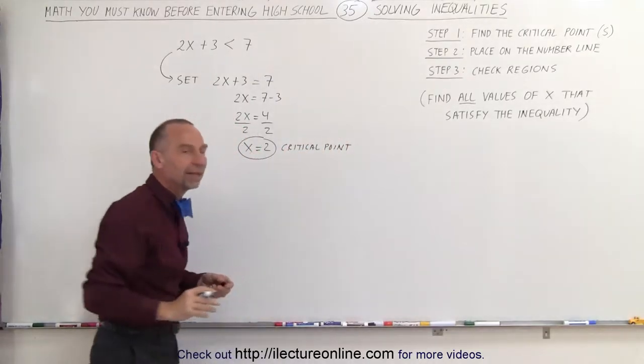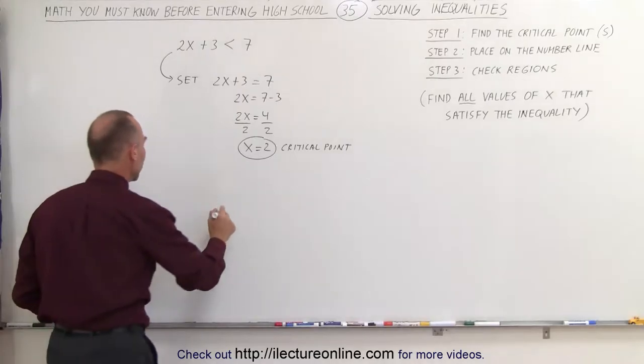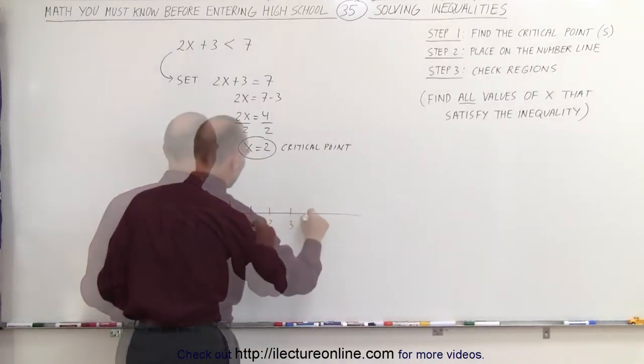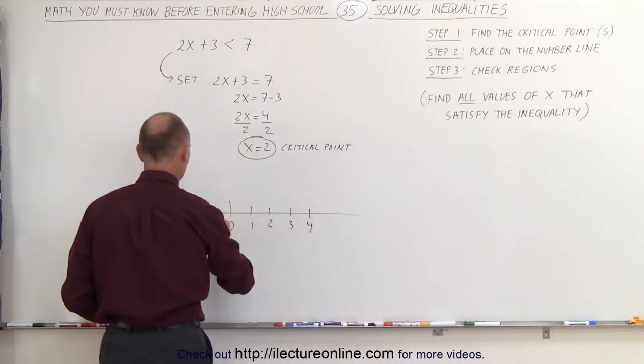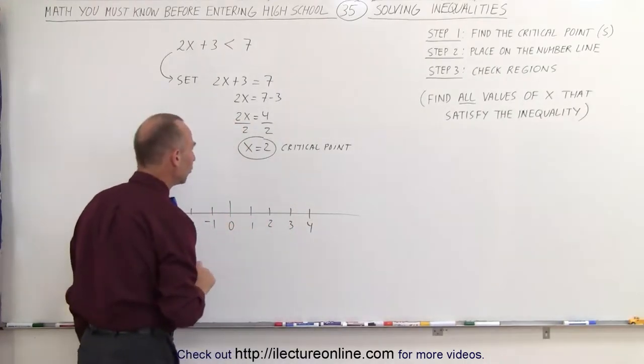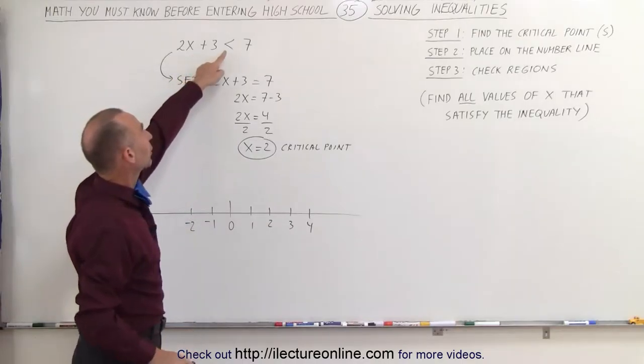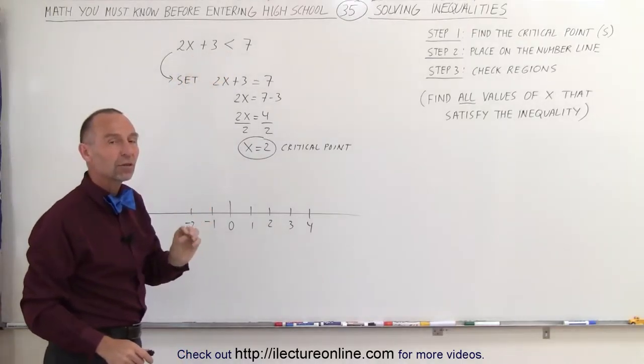Now the next step tells us to place that on the number line. So we're going to draw a number line. Here's the number 0, 1, 3, 4 and we have negative 1, negative 2 and so forth. So we find the critical point. Now notice, since the inequality sign does not have an equal sign associated with it...